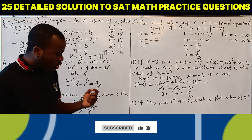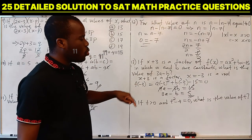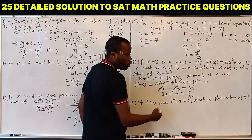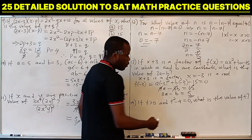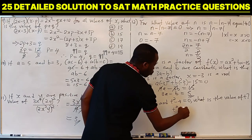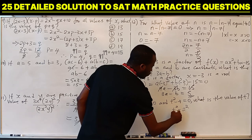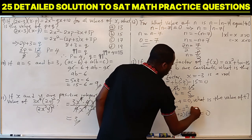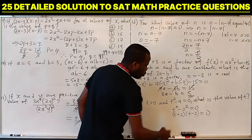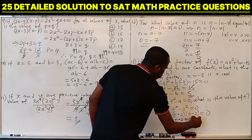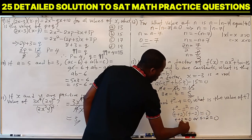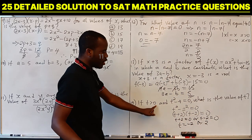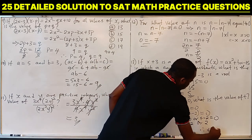Question 14: if T is positive and T² minus 4 equals 0, what is the value of T? We recognize this as a difference of two squares: T² minus 2², which factors as (T plus 2)(T minus 2) equals 0. So T equals minus 2 or T equals 2. Since T is greater than 0, T equals 2.